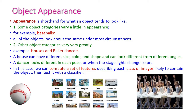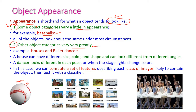Object appearance refers to how an object looks in an image. Based on appearance, objects can be divided into two categories. In the first category, variations are very little — for example, baseballs or any other balls, where the shape will be very similar. In the second category, variations are very high. For example, a house varies based on size, color, shape, and even looks different from different angles.